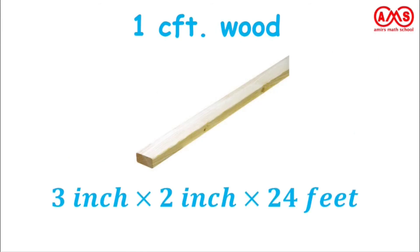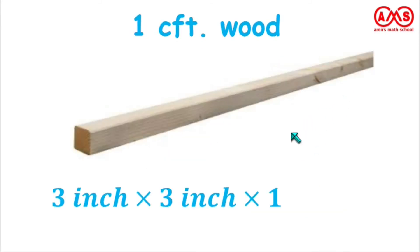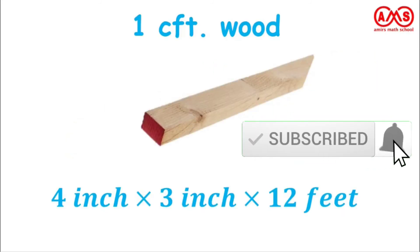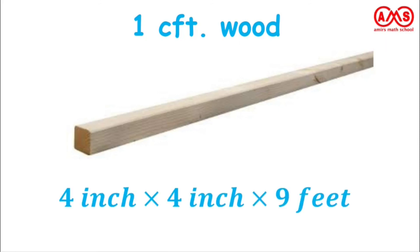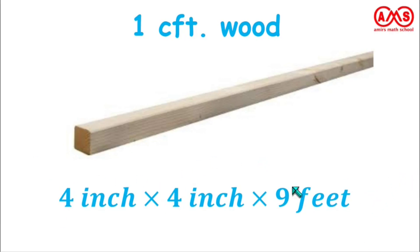For 3 by 2 inch wood, the length should be 24 feet to give 1 CFT. For 3 by 3, the length should be 16 feet. For 4 by 3, the length should be 12 feet. For 4 by 4, the length should be 9 feet. The main trick is that the product of the three dimensions must always equal 144 — for example, 4 times 4 times 9 equals 144. For 6 by 6 inch wood, the length should be 4 feet, since 6 times 6 times 4 equals 144. The total value after multiplying all three dimensions must always be 144.